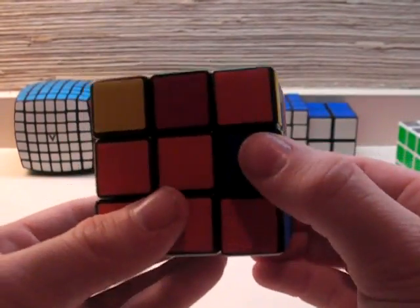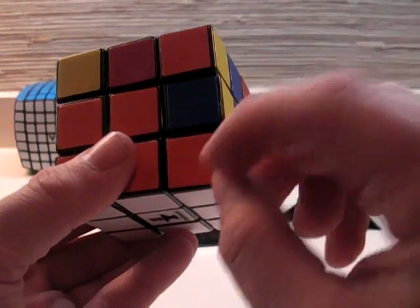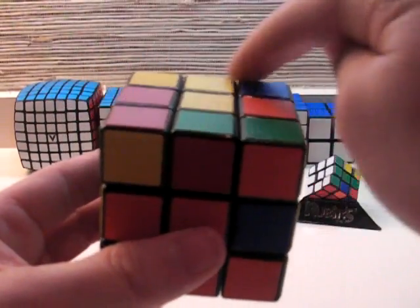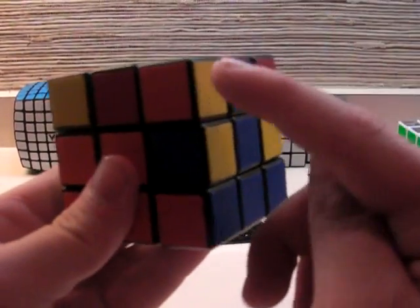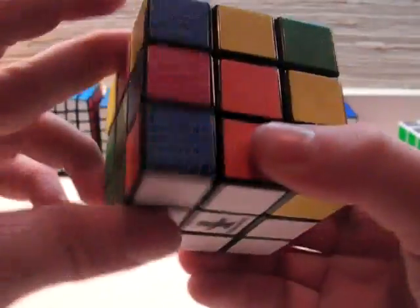Now I've gone over every possible case where the corner is in the correct spot, but it is not flipped properly. And then I have gone over the case where it's in the top layer with white on top, with white on right, or white on the left.